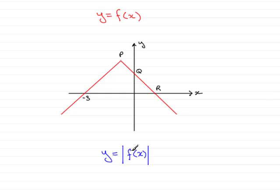Now when you have the mod of a function, all negative values of f of x, that's this section here and this section here, become positive. So what does that do to the graph?